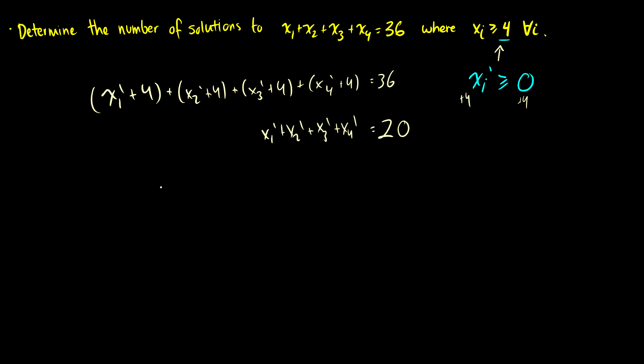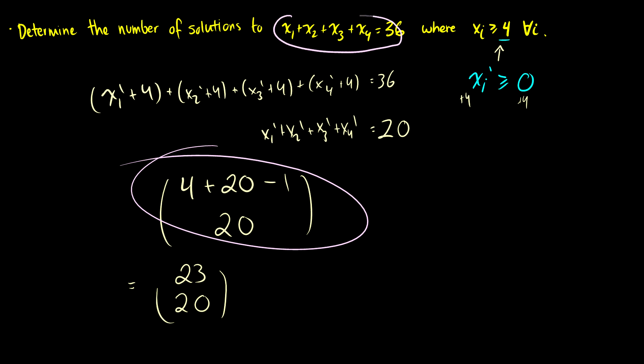So then we use our formula here. We have 4 bins and 20 balls. This is going to be 4 plus 20 minus 1 choose 20, and this equals 23 choose 20. If you have forgotten this formula, please check out the Combinations with Repetition lecture video and that'll remind you about that formula. So the key issue in this problem was converting this equation to the new augmented equation where we have everything greater than or equal to zero, and we know how to solve it.